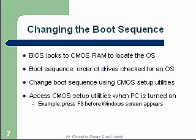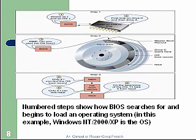Access the CMOS setup utilities when the PC is turned on. If a computer won't boot to a CD-ROM, it's probably because the CMOS is not set up properly. Usually the Delete key or some function key can be pressed to access the setup utility. There's also a diagram in the book showing the steps where the BIOS searches for and finds the MBR, and then loads the operating system from the hard drive.